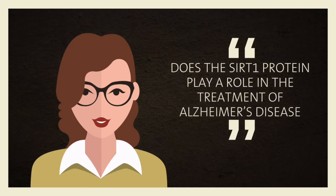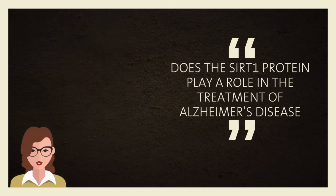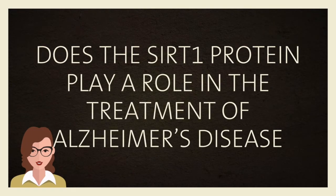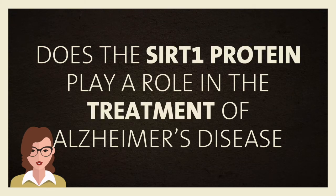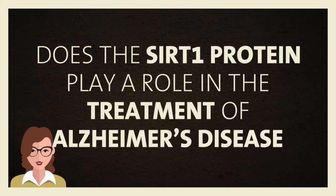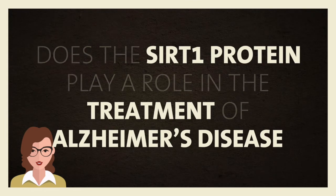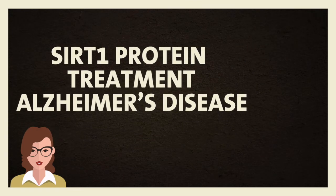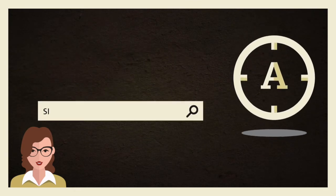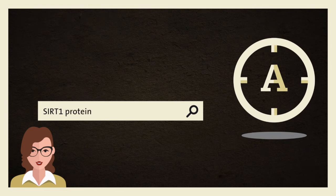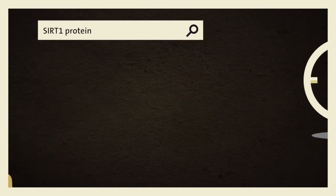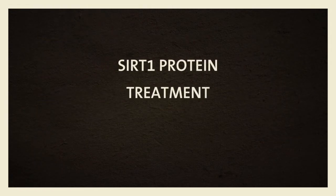First of all, we identify the main concepts in this question. Here, for example, we have three key concepts: SIRT1 protein, treatment, Alzheimer's disease. There you go — you have your first three keywords that you can use in search tools. However, that's still not enough.